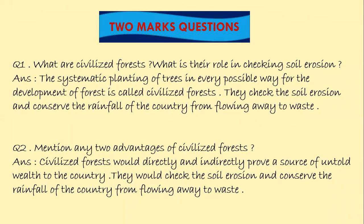Now let us see the two-mark category questions. Question 1: What are civilized forests? What is their role in checking soil erosion? Answer: The systematic planting of trees in every possible way for the development of forest is called civilized forest. They check soil erosion and conserve the rainfall of the country from flowing away to waste. Question 2: Mention any two advantages of civilized forests. Answer: Civilized forests would directly and indirectly prove a source of untold wealth to the country. They would check soil erosion and conserve the rainfall of the country from flowing away to waste.